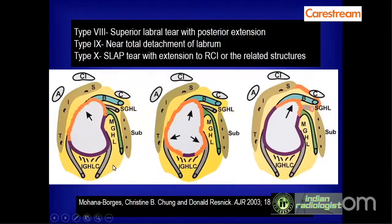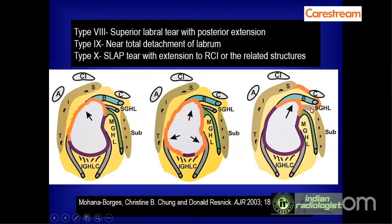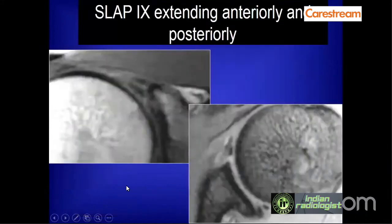Type 8 involves extensive involvement of the posterior and middle portion of the posterior labrum. Type 9 is near-total detachment of the labrum. Type 10 is SLAP 3 with extension into the rotator cuff interval involving the superior glenohumeral ligament. SLAP 9 shows involvement of the superior labrum, anterior labrum, and posterior labrum.